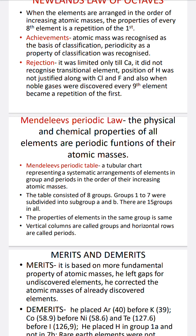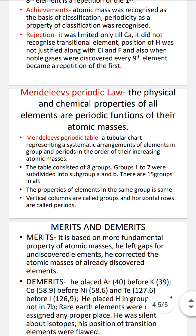In Mendeleev's periodic table, there were eight groups. Groups one to seven were further subdivided into Group A and Group B, giving a total of 15 groups. The properties of elements in the same group were the same. Mendeleev was the first to clearly define groups and periods — vertical columns he called groups, and horizontal rows he called periods.